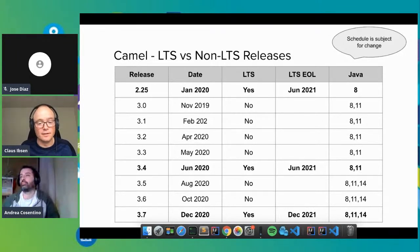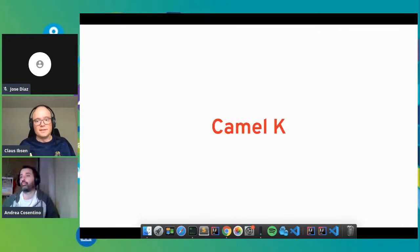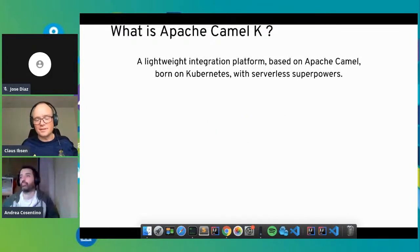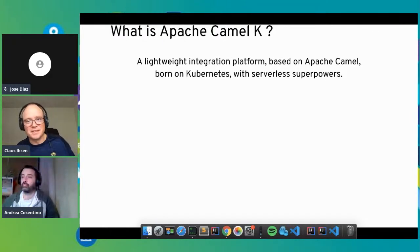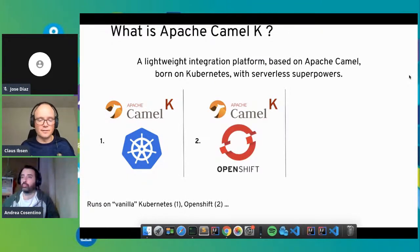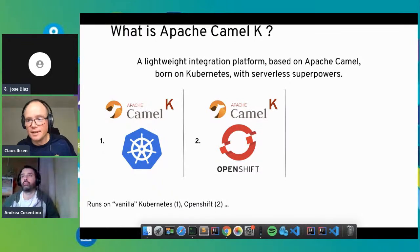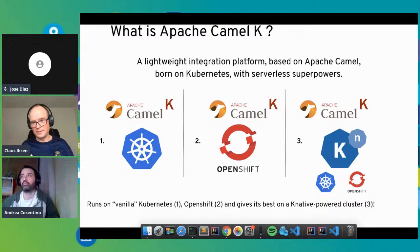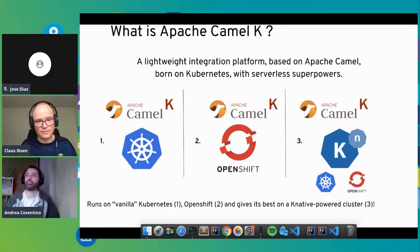An exciting new product is Camel K. Our tagline for it is: a lightweight integration platform based on Camel, born on Kubernetes with serverless superpowers. With Camel K, you can run it on standard Kubernetes or enterprise distributions like OpenShift from Red Hat. You also get the best with serverless superpowers — that means Knative. We'll see some of that in action, focusing mostly on plain Camel K running on standard Kubernetes.